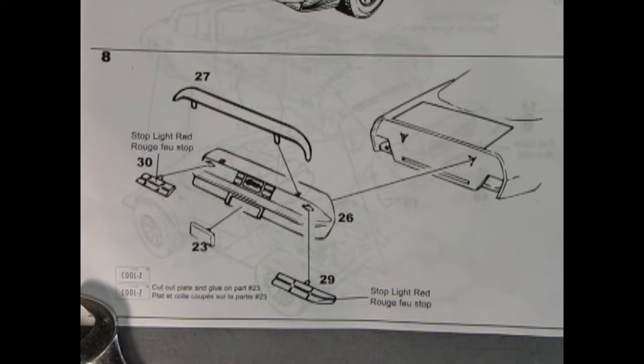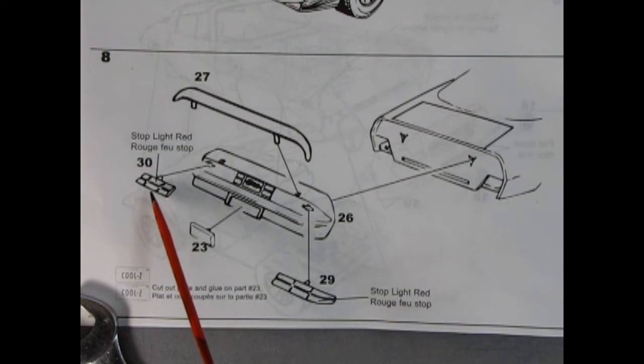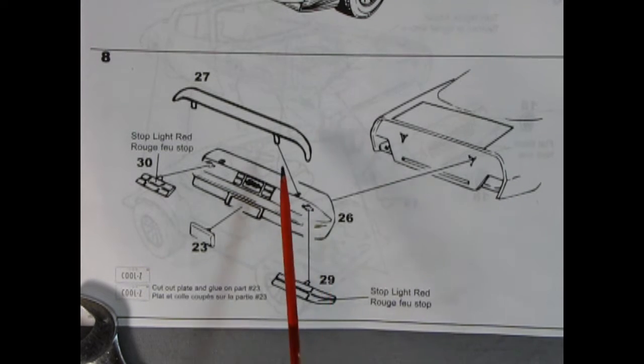Then here's the back end going together which includes the rear clip popping into these two little holes and then we've got our rear tail lamps which you'll have to paint a little stoplight red. Just have a good look at a real Camaro photo, you'll see what I mean. Then we've got our rear spoiler being put on place and then our license plates going on. And here it says cut out plate and glue on part number 23 and it looks like it is a cool Z from Iowa.